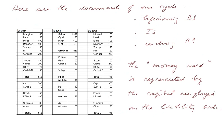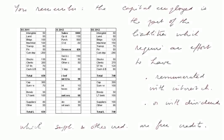Here are the documents of one cycle: the beginning balance sheet, the income statement, and the ending balance sheet. And the money used is represented by the capital employed on the liability side. You remember, the capital employed is the part of the liabilities which require an effort to have. That is, which are remunerated with interest charges, or which are remunerated with dividends, the equity and the debt.